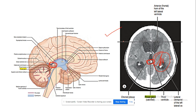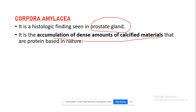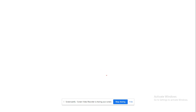One more similar term is corpora amylacea, which is a feature of the prostate gland. It is an accumulation of a dense amount of calcified material in the prostate gland. This is all for this session, thank you.